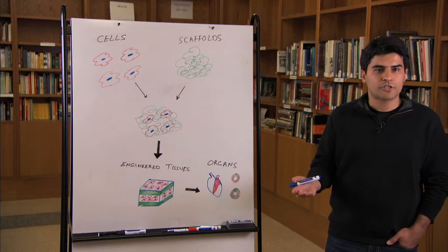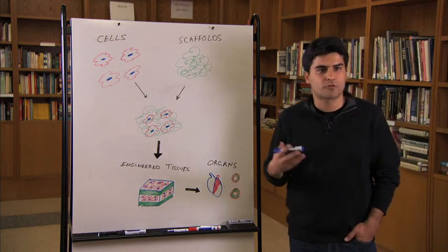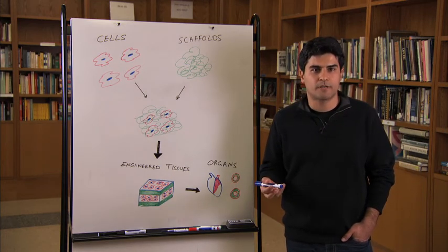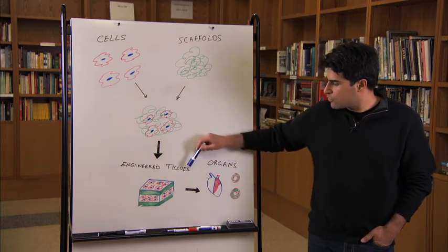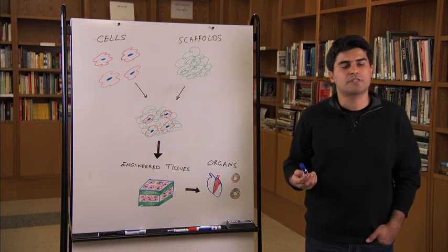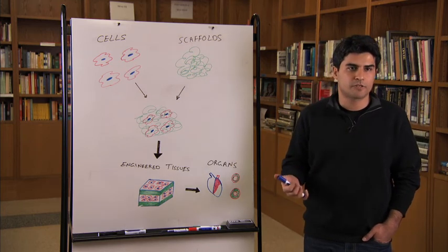These organs can be functional organs such as heart, kidney, or bladder, or structural tissues such as cartilage and skin. We can also use this technique to create vasculature to supply blood for different organs.